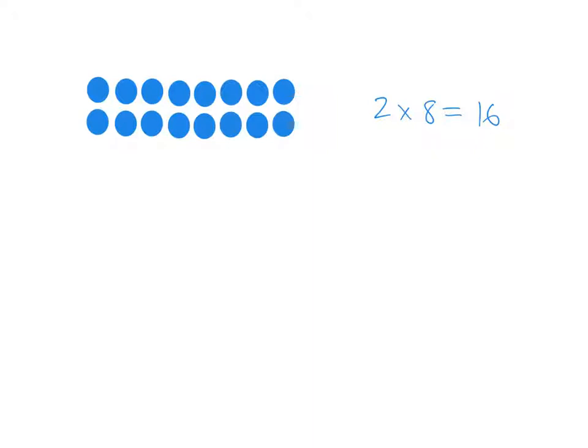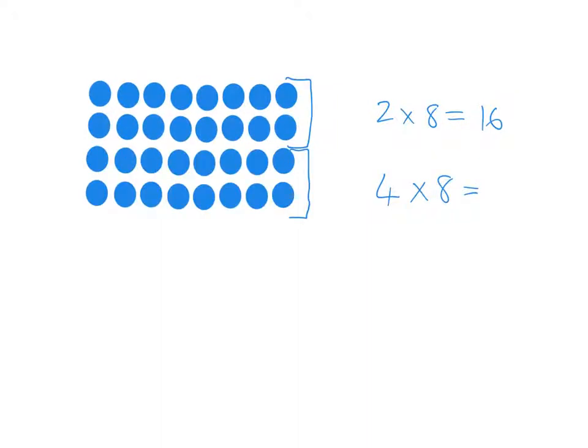But this array idea will show me that if I know my 2 times table, my 4 times table is really easy. If I want to know what 4 times 8 is, then picturing the array for 4 times 8, I can just see that 4 times 8 is just 2 lots of 2 times 8. It's just double 2 times 8, so all I have to do is double 16, and I'll get the answer of 32.